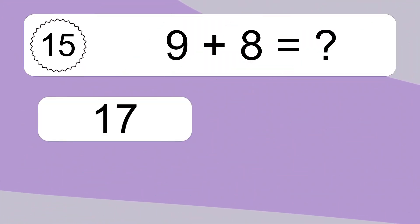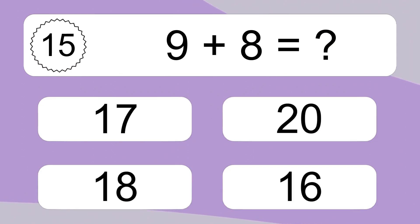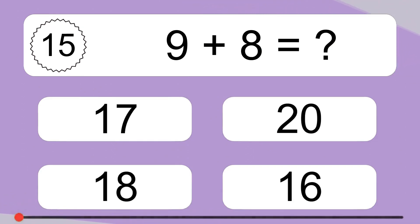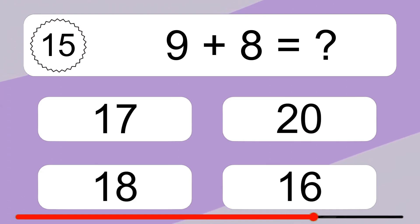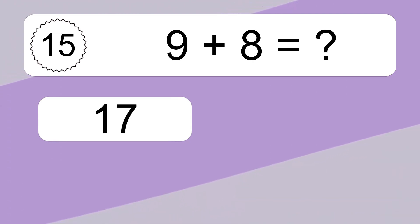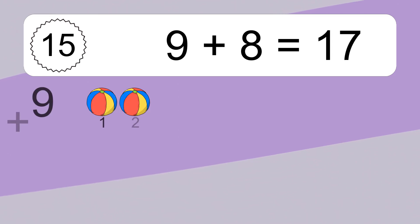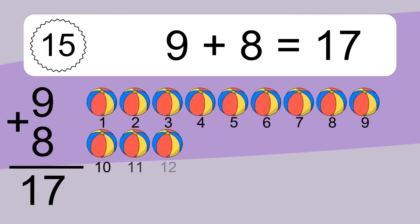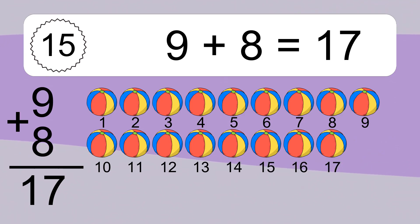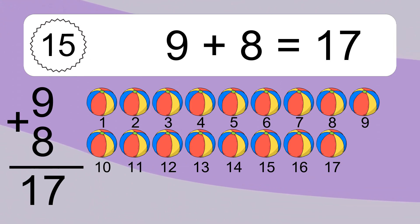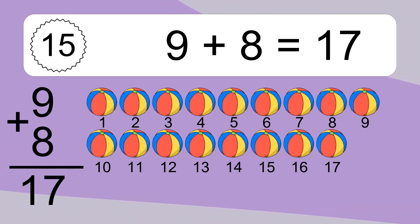9 plus 8 equals what? 9 plus 8 equals 17. Let's count it. 1, 2, 3, 4, 5, 6, 7, 8, 9, 10, 11, 12, 13, 14, 15, 16, 17.